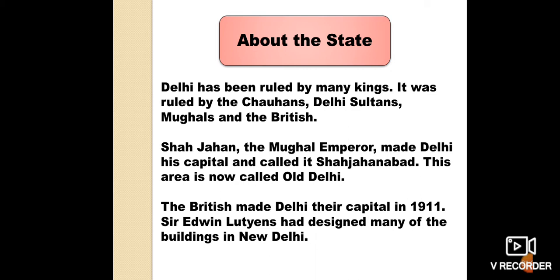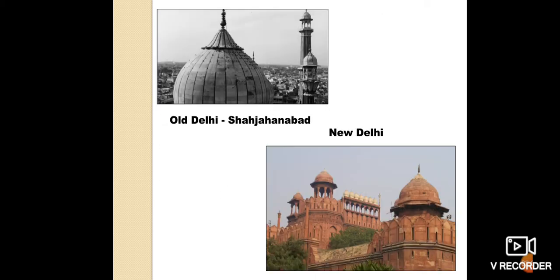Shah Jahan, the Mughal Emperor, made Delhi his capital and called it Shahjahanabad. This area is now called Old Delhi. The British made Delhi their capital in 1911. Sir Edwin Lutyens had designed many of the buildings in New Delhi. Here you can see two pictures — one showing Old Delhi and the other showing New Delhi.